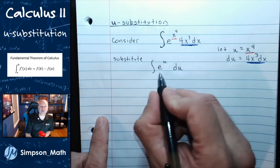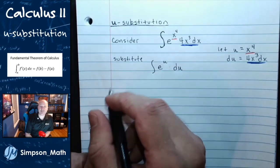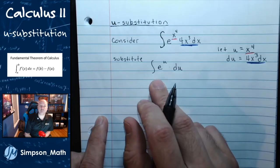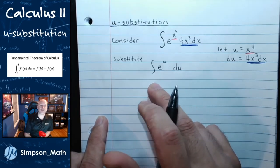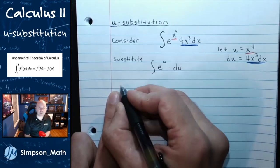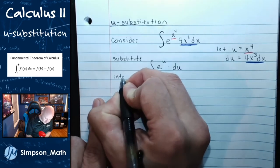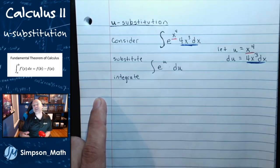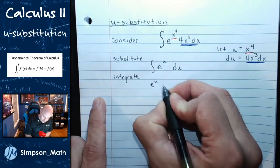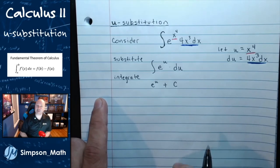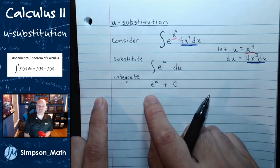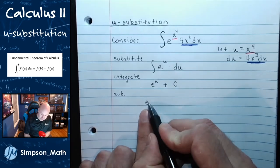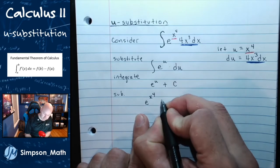Now I feel comfortable integrating. I know this integration rule from the Calculus 1 setting. If you come across an unfamiliar rule, go back and review some Calc 1 videos. The integral of e to the u is simply e to the u plus any constant. Now this is in u, so I want to go back into x land — substituting u back as x to the fourth: e to the x to the fourth plus c.